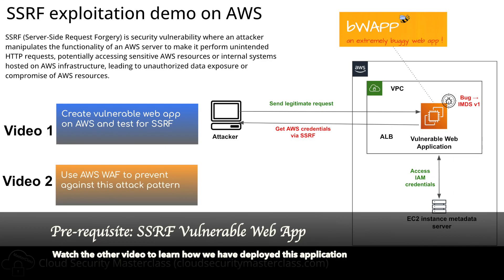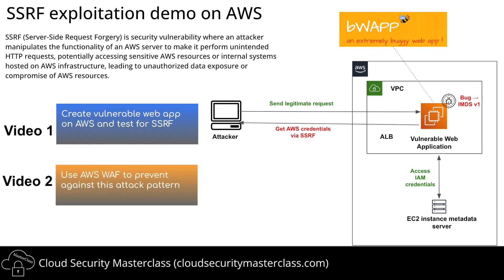To test AWS WAF and see how it could prevent SSRF, we need a good example of an SSRF vulnerable application on AWS. I have created another video on the same topic where I deploy an EC2 instance and create an SSRF vulnerable web application, and in the later part also show how SSRF exploitation can be used to extract key AWS credentials. Please take a look at that lab, as it provides the prerequisite needed for this lab, where we can then see how WAF could be used to prevent against this attack.